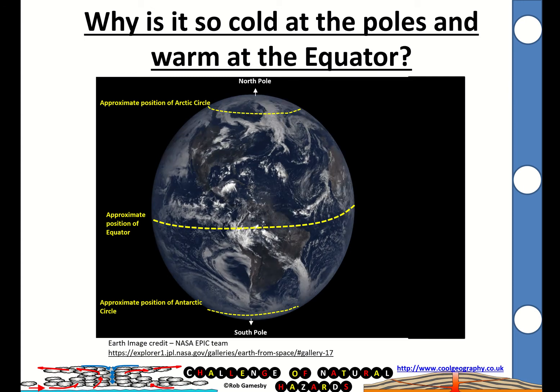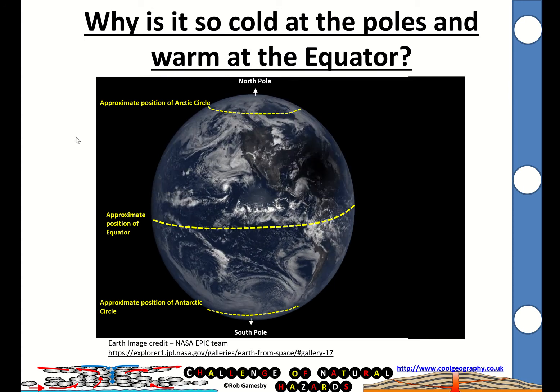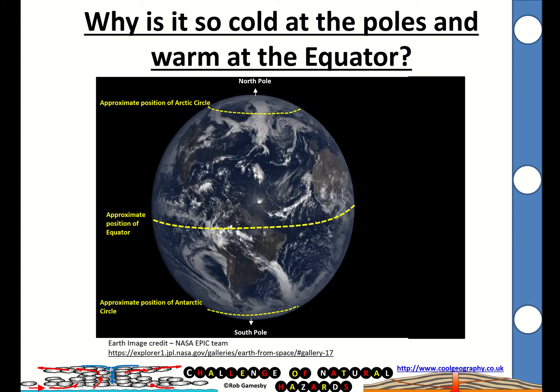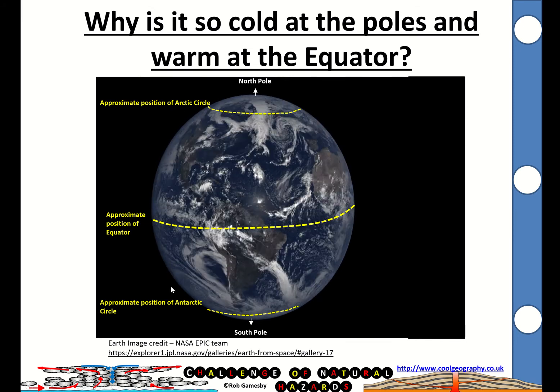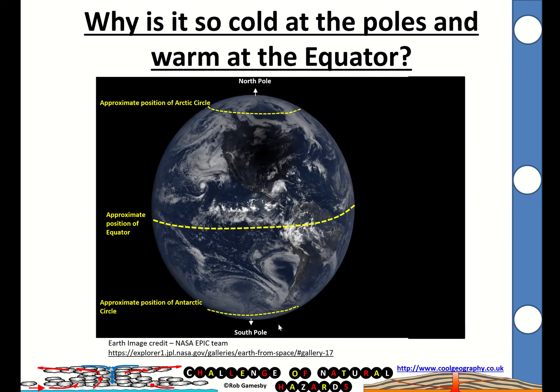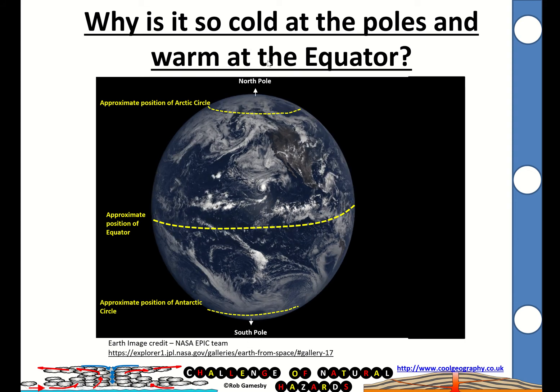You've got a rotating Earth there, obviously not the correct speed. And I've marked on the approximate position of the equator, the approximate position of the Arctic Circle and the Antarctic Circle. Those are quite significant. Now you've got South Pole and your North Pole.